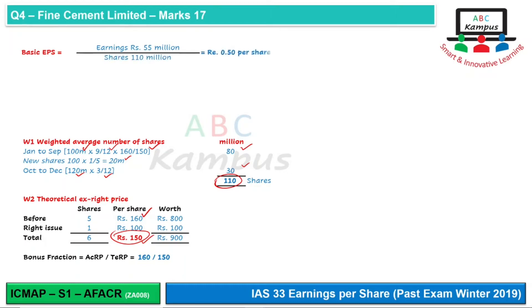With earnings of 55 million and weighted average shares of 110 million, basic EPS is calculated as Rs. 0.50 per share. So our first part is solved.